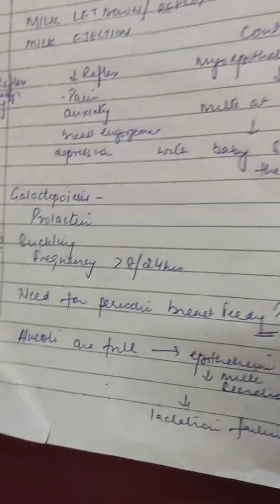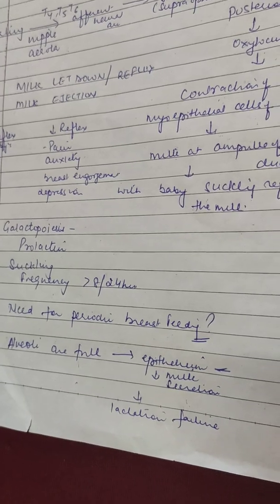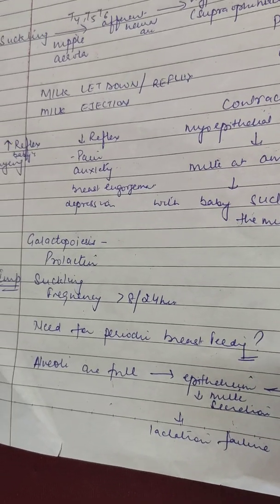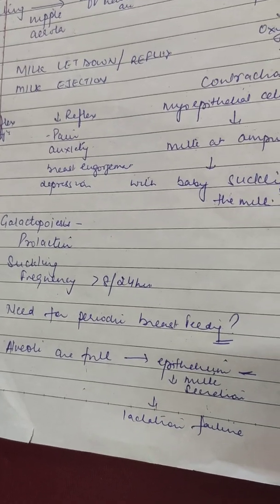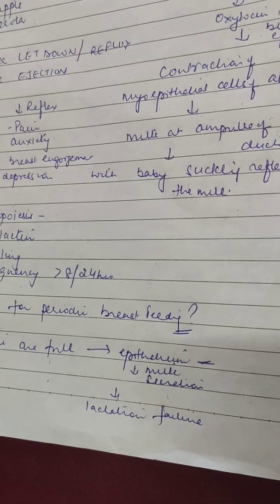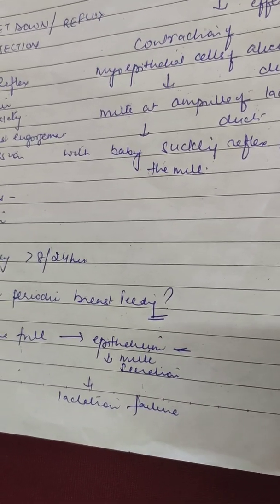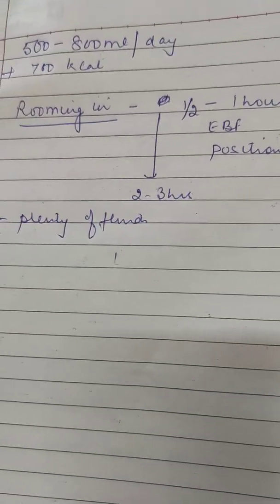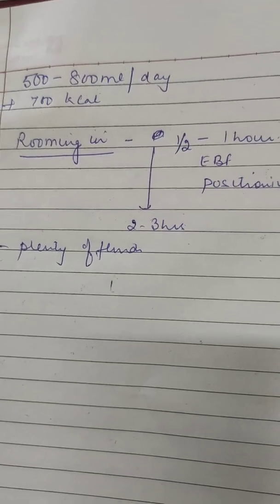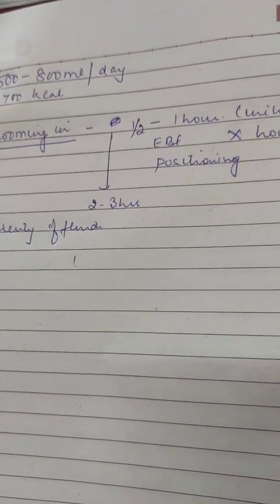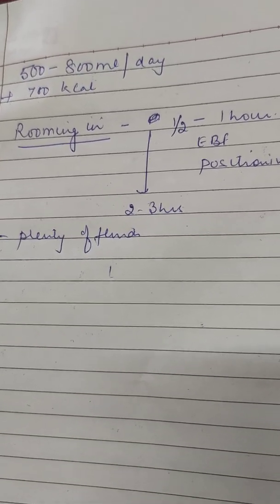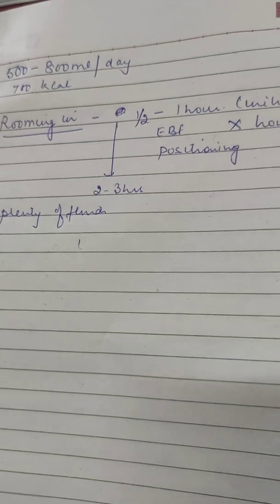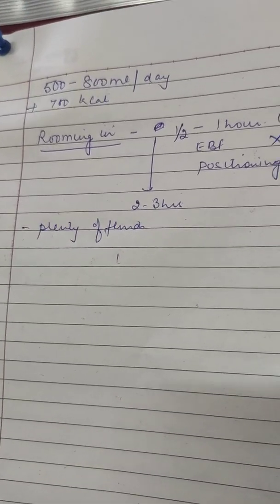If the patient has fed the baby and still feels the breasts are heavy, she is asked to express the milk manually or with a breast pump. If the alveoli are full and milk is not ejected, there is negative feedback and it will result in lactational failure. A female basically produces 500 to 800 ml of milk per day, and for that she needs about 500 to 700 kilocalories more than her normal diet, so she should be on a good, high-nutritious diet during lactation.